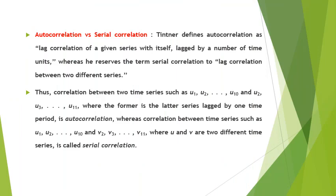Although it is now common practice to treat the terms autocorrelation and serial correlation synonymously, some others try to distinguish the two terms. For example, Gerard Tintner, an Austrian-born American econometrician, defines autocorrelation as the lag correlation of a given series with itself, lagged by a number of time units. Whereas he uses the term serial correlation to mean lag correlation between two different time series. Thus, correlation between two time series such as U1, U2, ... to U10, where the second series is lagged from the former series by one time period, is autocorrelation.